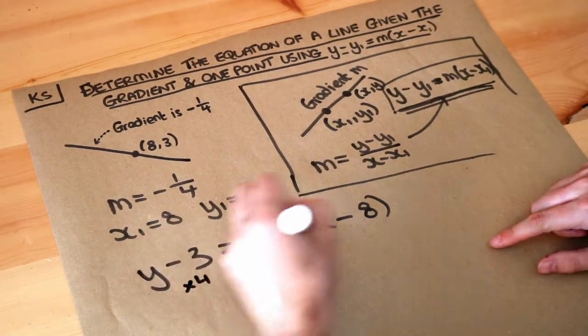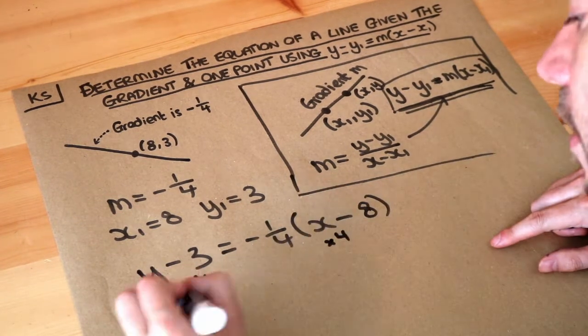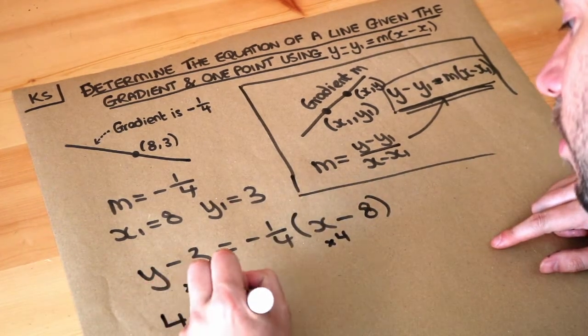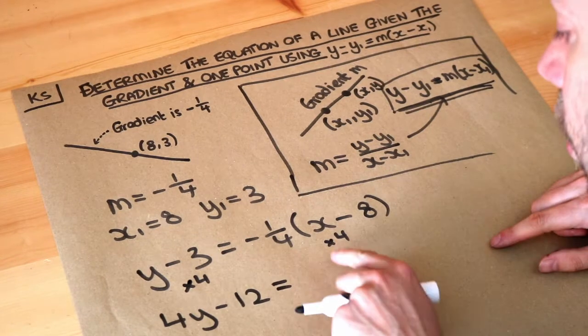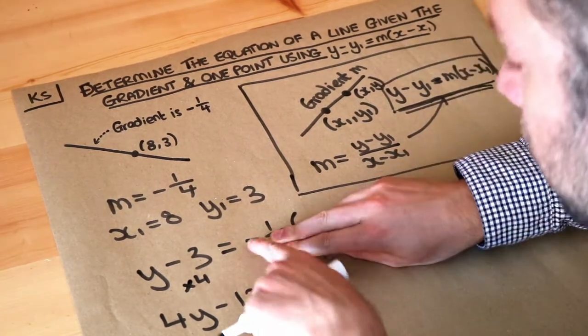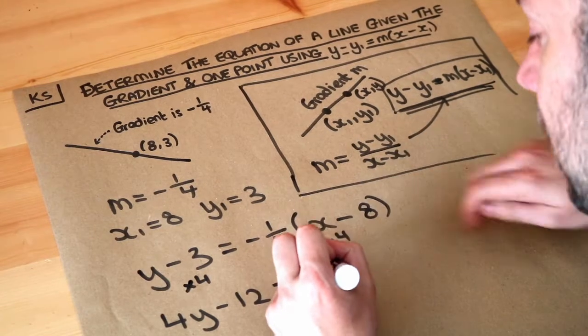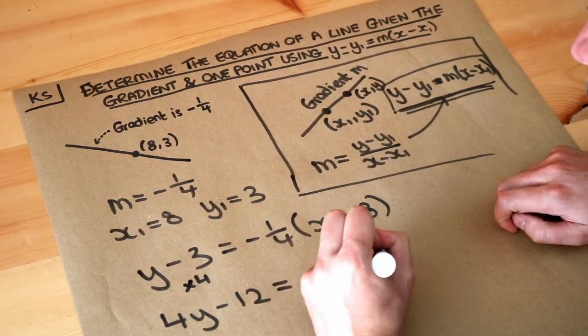So we multiply both sides of the equation by 4, then we get 4y minus 12 is equal to, well, if we times this by 4 it just gets rid of the over 4, we still got the minus, so it's minus brackets and then x minus 8.